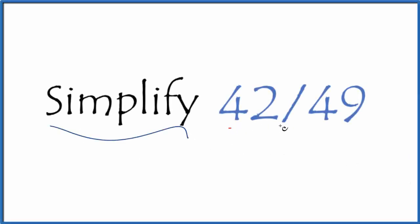Let's simplify the fraction 42/49. So 42 over 49. And what we're trying to do is we're trying to find a fraction that's equivalent, that has the same value, just it's in lowest terms or simplest form. To do this, it's helpful if you know your multiplication tables.